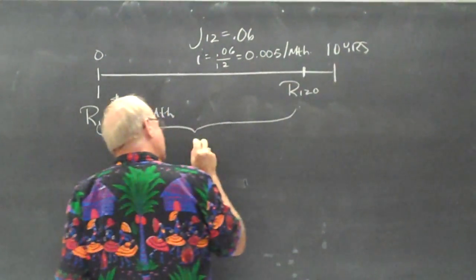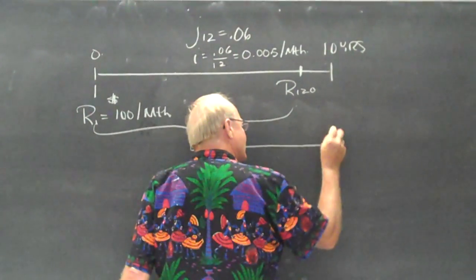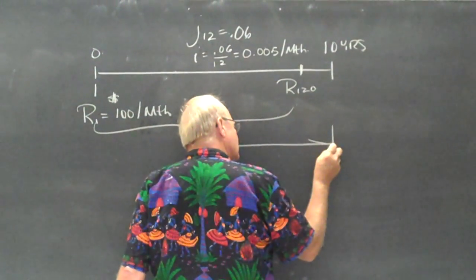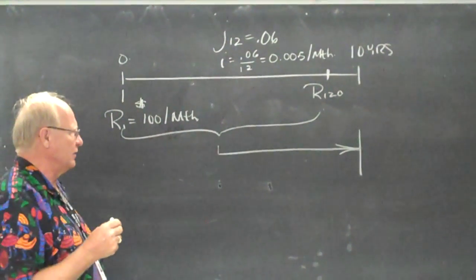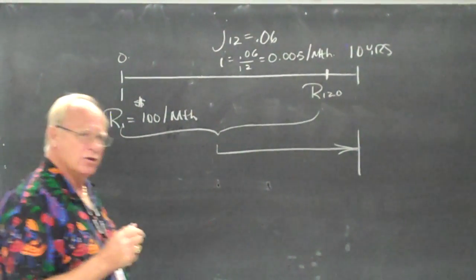Let's calculate how much money this person will have at the end of the 10 years. They're quitting smoking now, they're going to put aside $100 a month starting today, and we want to know the future value.